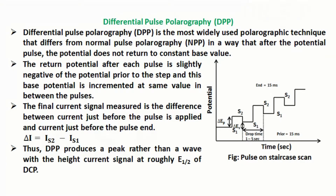The final current signal measured is the difference between the current just before the pulse is applied and the current just before the pulse ends. The change in current: delta I equals I_S2 minus I_S1, where I_S2 is the current at the end of the pulse and I_S1 is the current just before the pulse is applied. Thus, DPP produces a peak rather than a wave, with the peak current signal at roughly E-half of DCP.